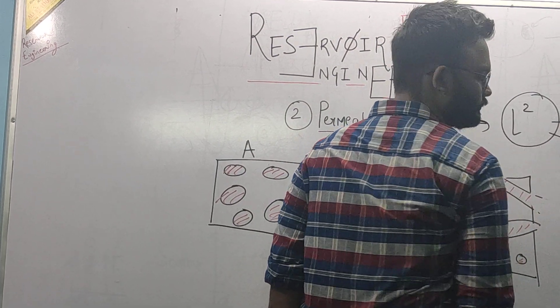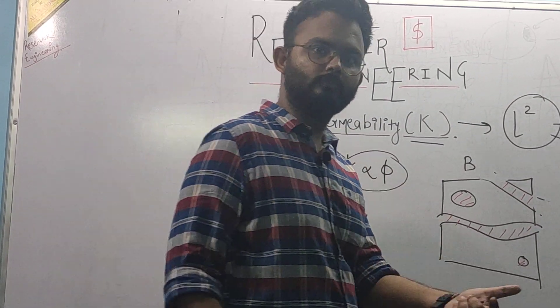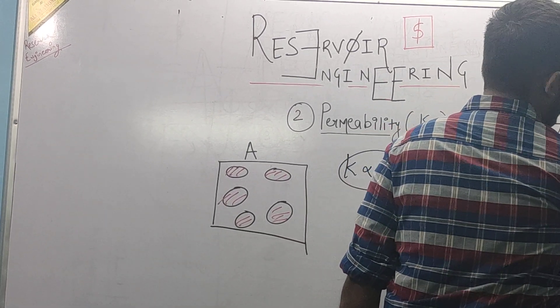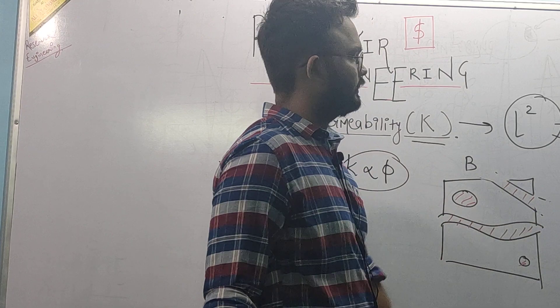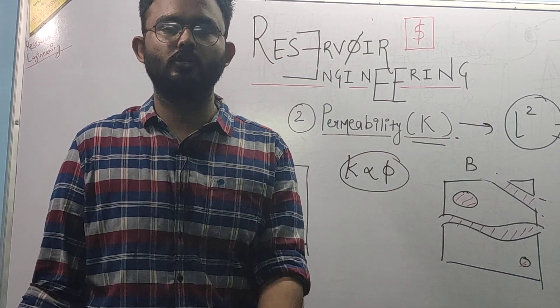In Darcy's law, the Henry Darcy's law, it came into existence because of permeability. It is 1 Darcy or very popular in field units, it is milli Darcy and it will be discovered about permeability, we will be talking in further sections, we will be talking about Darcy's law.